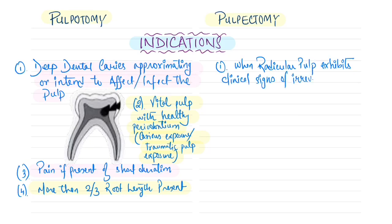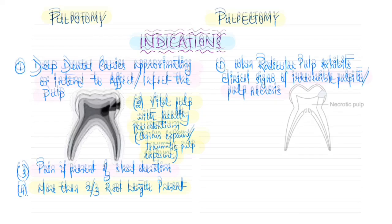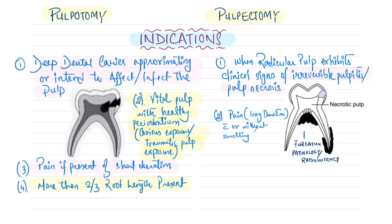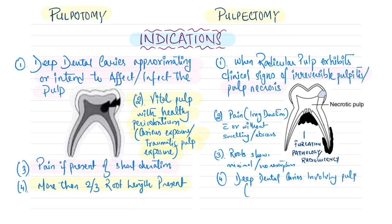Indications for pulpectomy: deep dental caries with radicular pulp exhibiting clinical signs of irreversible pulpitis or pulp necrosis; presence of furcation pathology or radiolucency suggestive of abscess; pain history of long duration with or without swelling or abscess; roots showing no or minimal resorption with at least two-thirds root length present; and a deep caries lesion involving the pulp — whether carious or traumatic exposure.